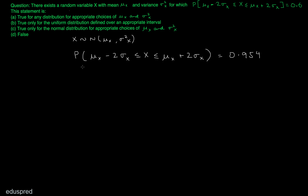That means, if you are working with a normal distribution, then 95.4% of the observations lie between μ minus 2σ and μ plus 2σ. And this is true for all normal distributions, irrespective of the value of μ and σ². So option C cannot be the right answer.